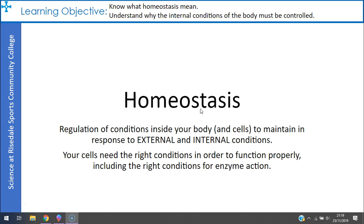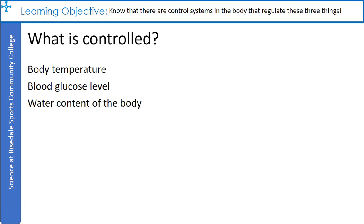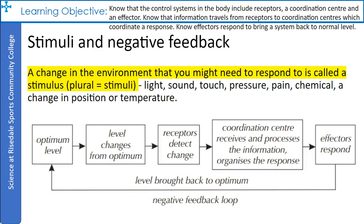These include both nervous and hormonal chemical communication systems. The conditions in your internal environment that need regulating include body temperature, blood glucose content, and water content of the body. All your automatic control systems are made up of three main components which work together to maintain a steady condition: cells called receptors, coordination centers including the brain, spinal cord, and pancreas, and effectors — muscles and glands.